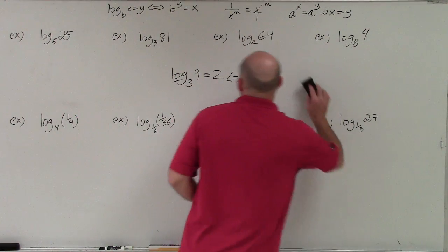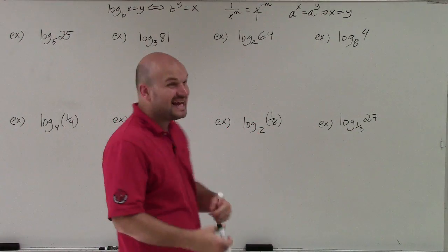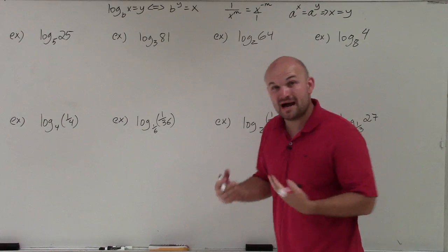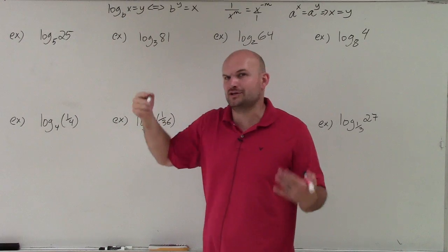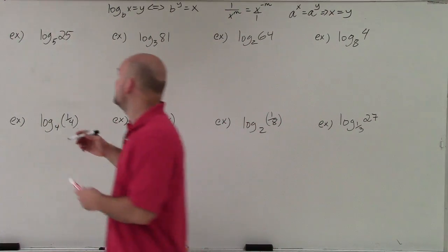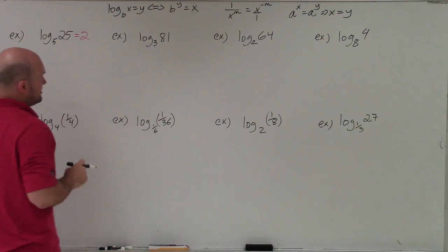So in my first example, I kind of tried to think of one that's going to be fairly simple. This is basically stating us 5 raised to what power is 25? Well, I know that 25 is a square number. And I know that 5 squared is 25. So therefore, the answer in this case is just going to be 2.